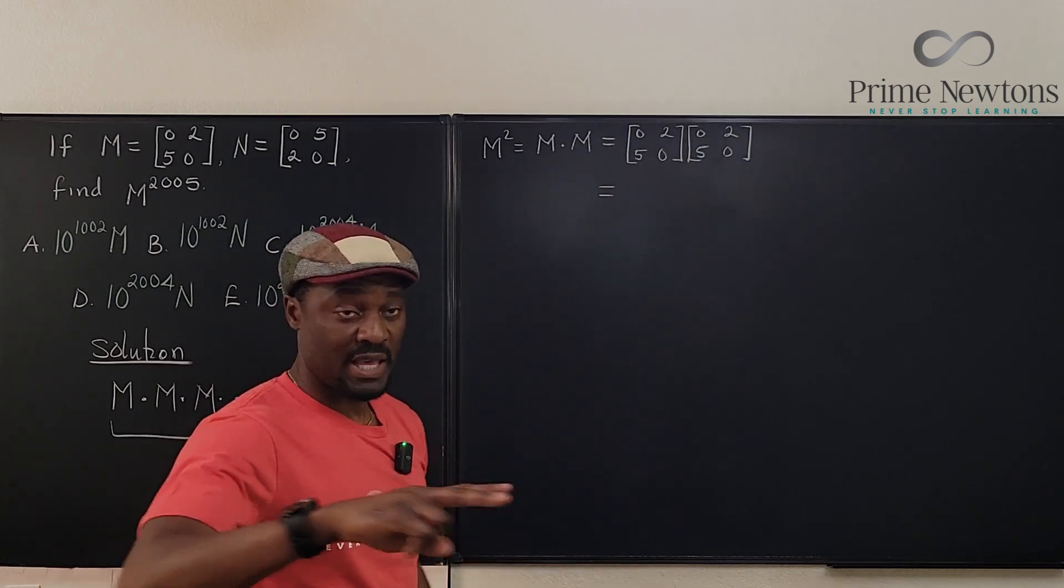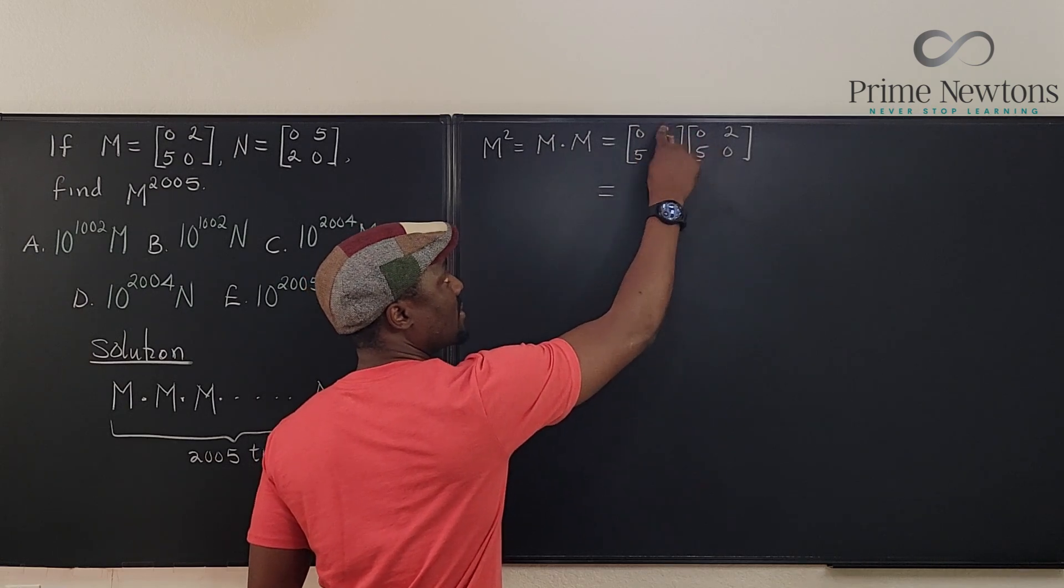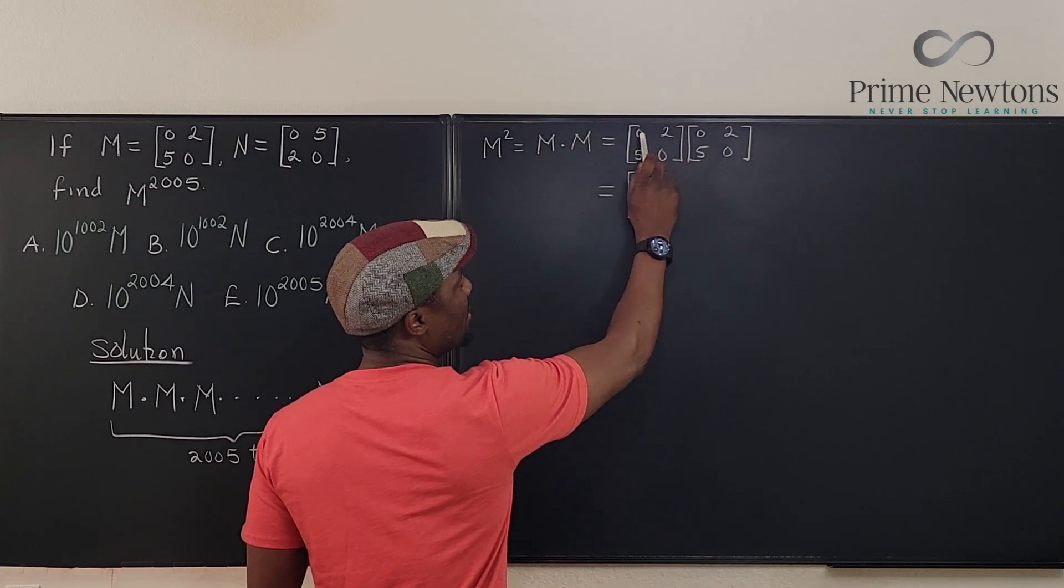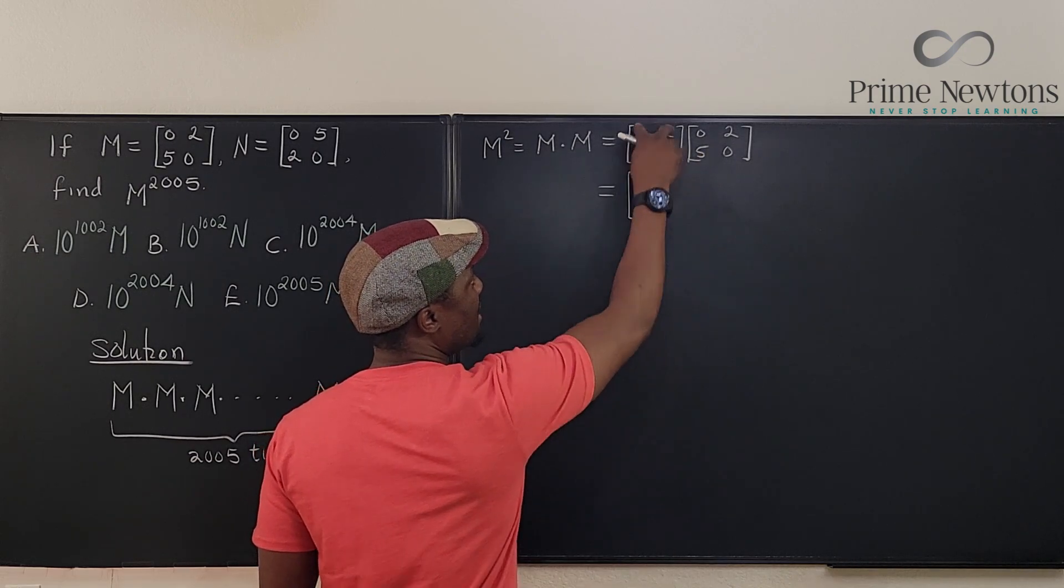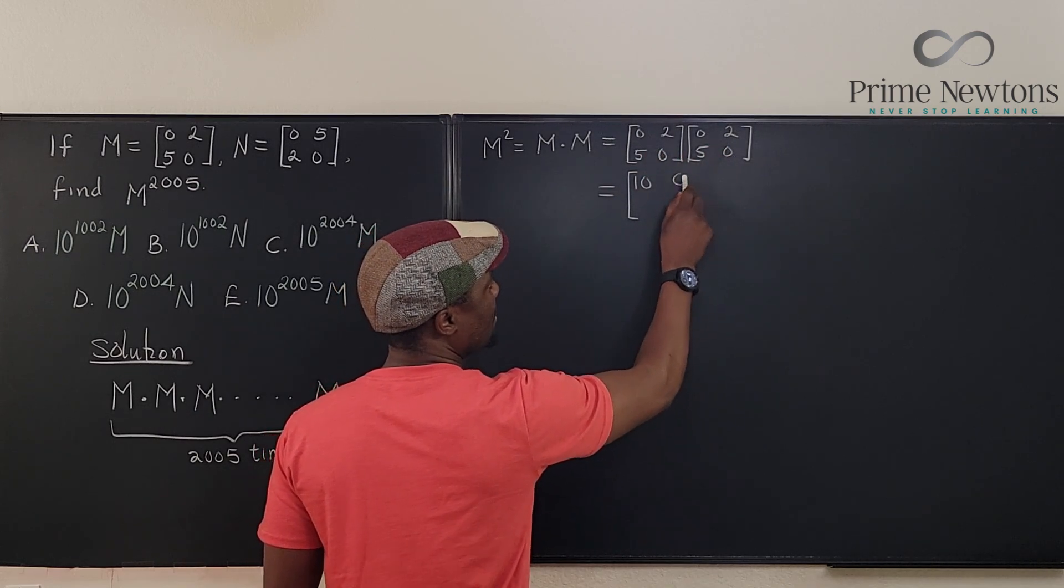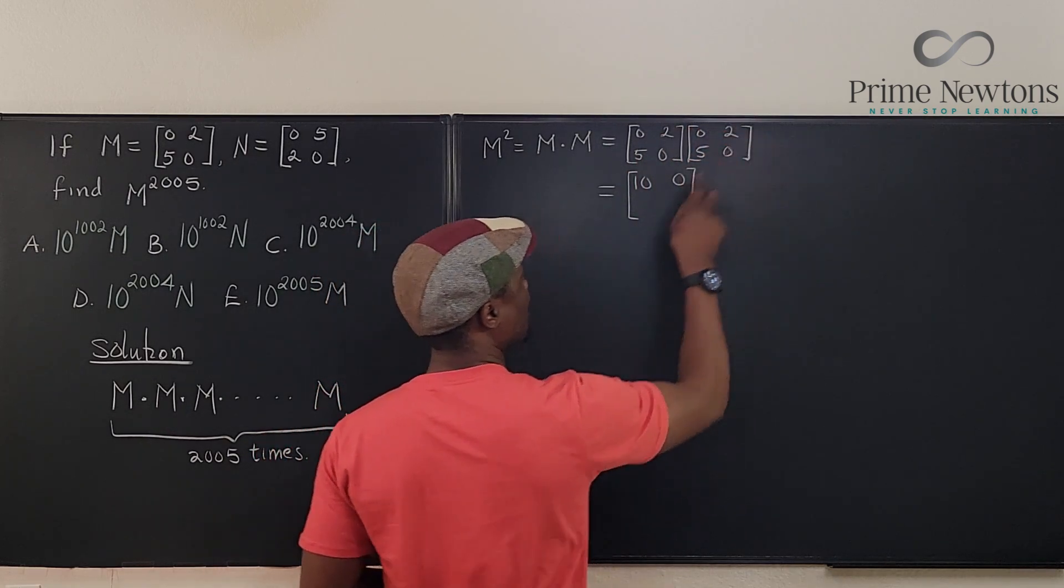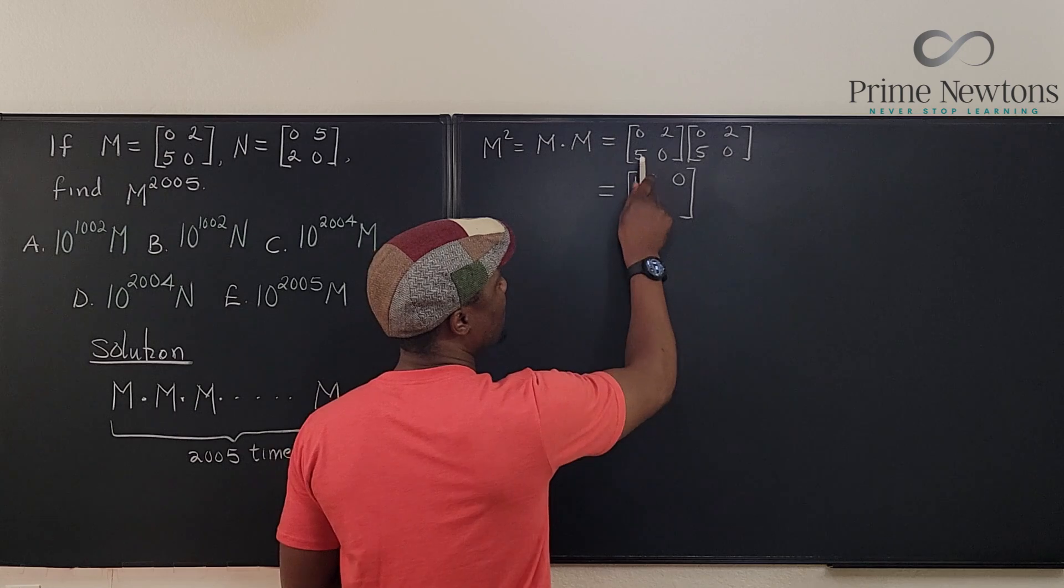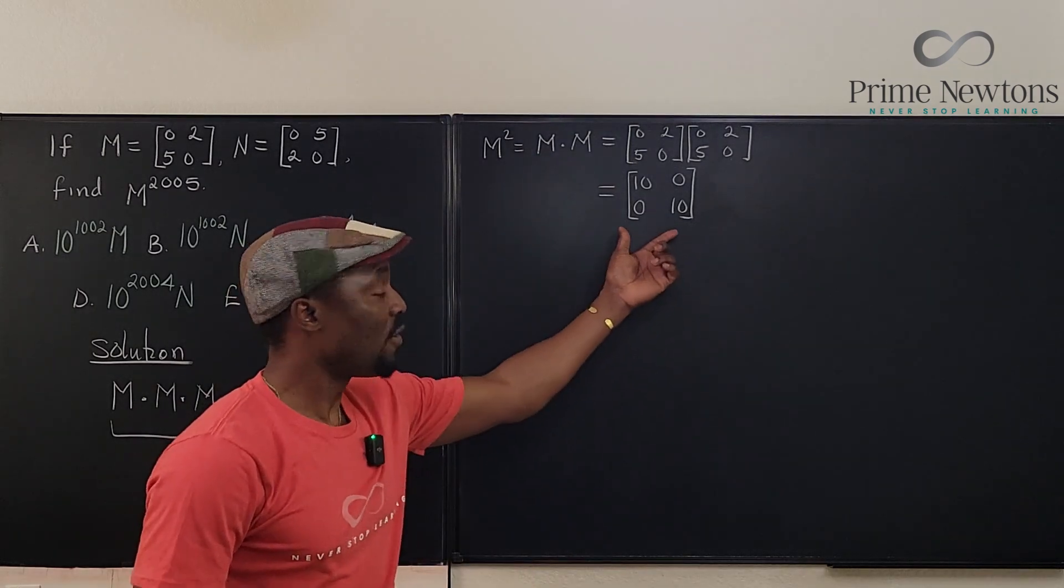Remember matrix multiplication. A row multiplies a column. So 0 times 0 plus 2 times 5, that's going to be 10. That's what's here. Then you take the same row and multiply the second one: 0 times 2 plus 2 times 0. That gives you 0. Everything there is 0. Here it's going to be the same thing. 5 times 0 plus 0 times 5, that is 0. And then 5 times 2 plus 0 times 0, so that's going to be 10. So now you've got this.